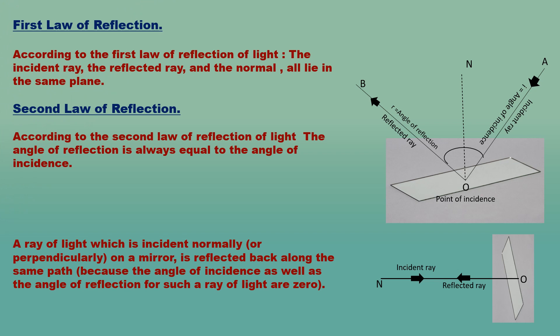The reflection of light from a plane surface or from a spherical surface takes place according to two laws known as the laws of reflection of light. According to the first law of reflection, the angle of reflection is always equal to the angle of incidence. The second law of reflection states that the angle of incidence is equal to the angle of reflection.